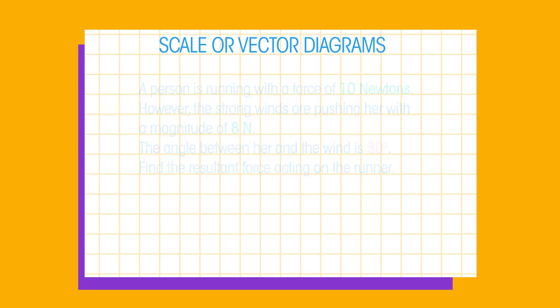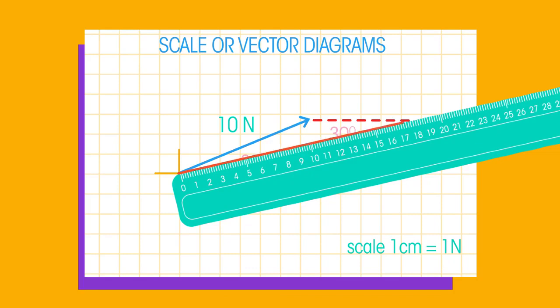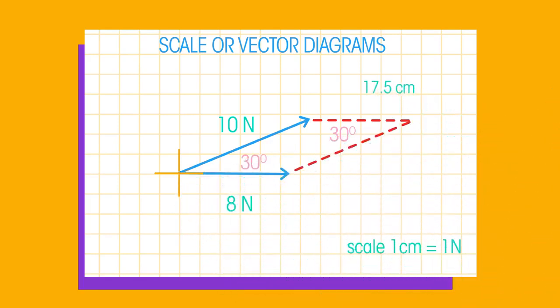Step one decide on sensible units. One centimeter equals one newton. Draw the first force. Step two draw the second force at the correct angle. Step three connect the lines by drawing a parallelogram. Step four measure the line from the start to the opposite corner. Use your scale to work out the magnitude of the force. For example 17 centimeters equals a resultant force of 17 newtons.